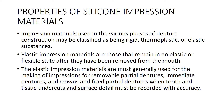Coming to one of the learning outcomes — the properties of silicon impression materials. Impression materials are used in various phases of denture construction and can be classified broadly as rigid, thermoplastic, or elastic substances. Elastic materials remain in an elastic or flexible state even after removal from the mouth. They are most generally used for RPD, immediate denture, and FPD when the tooth has undercuts or details need to be recorded accurately.